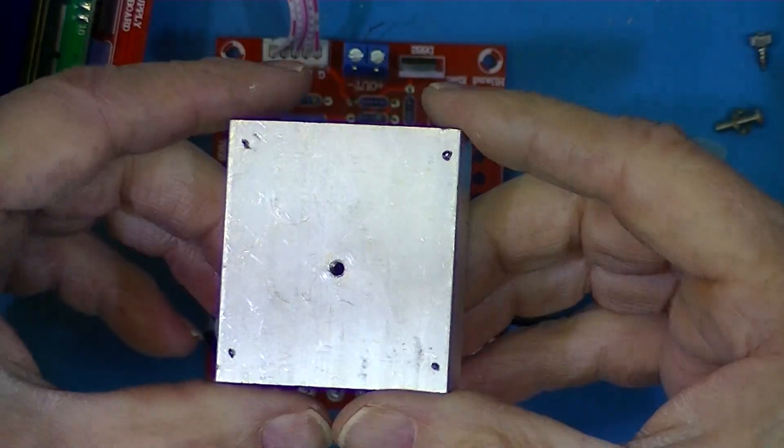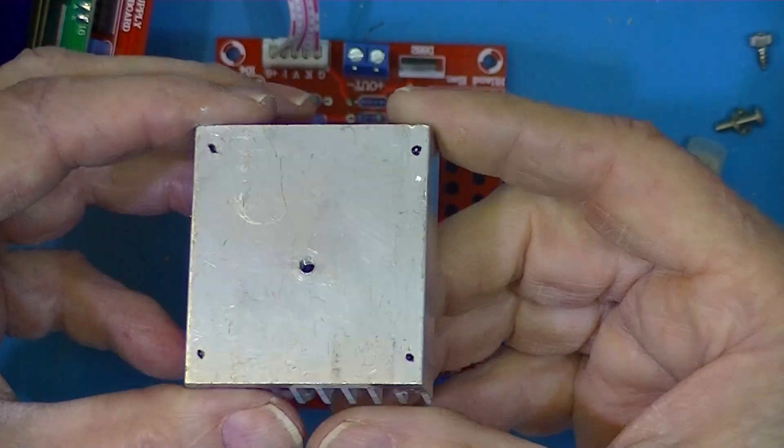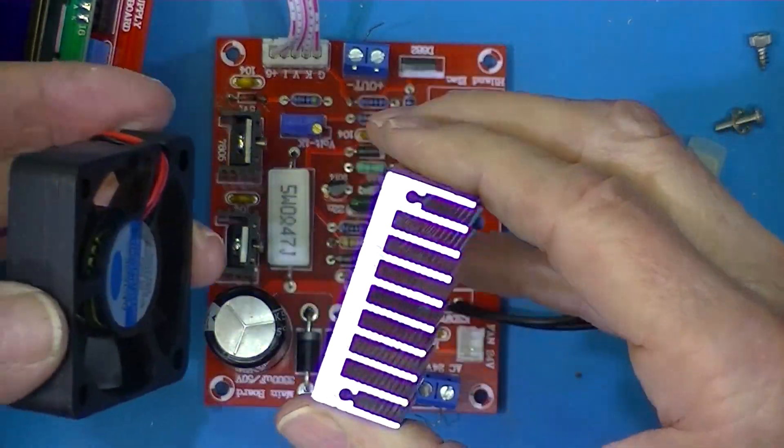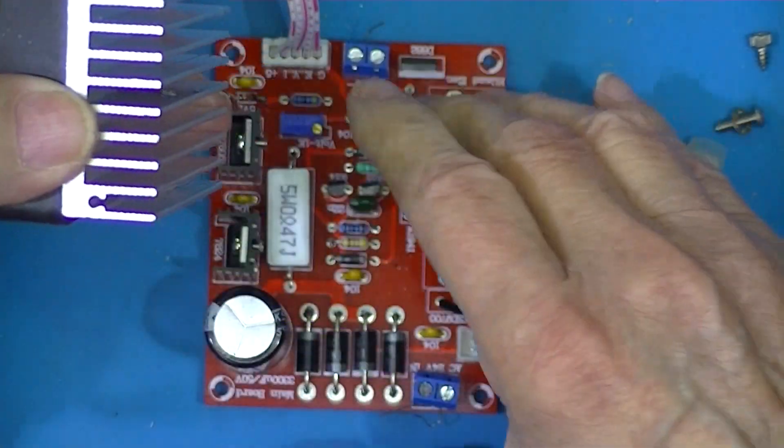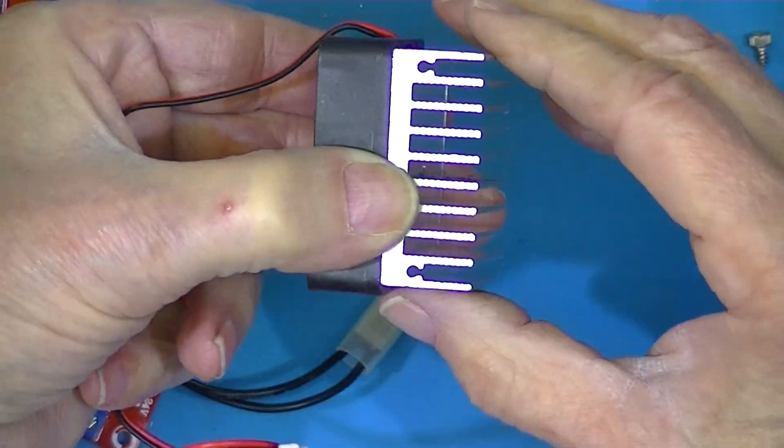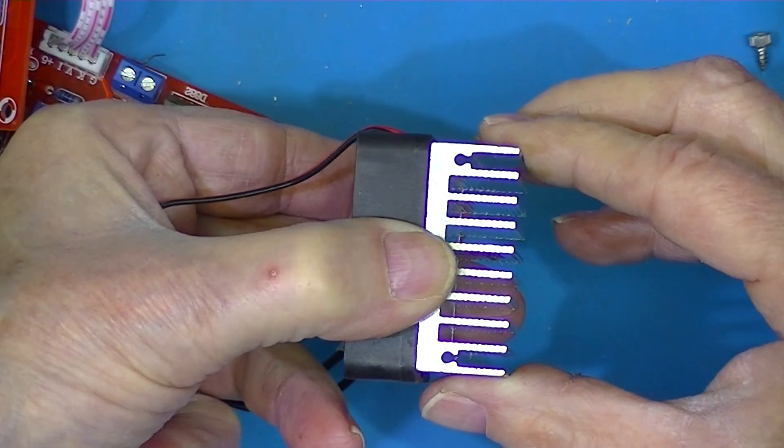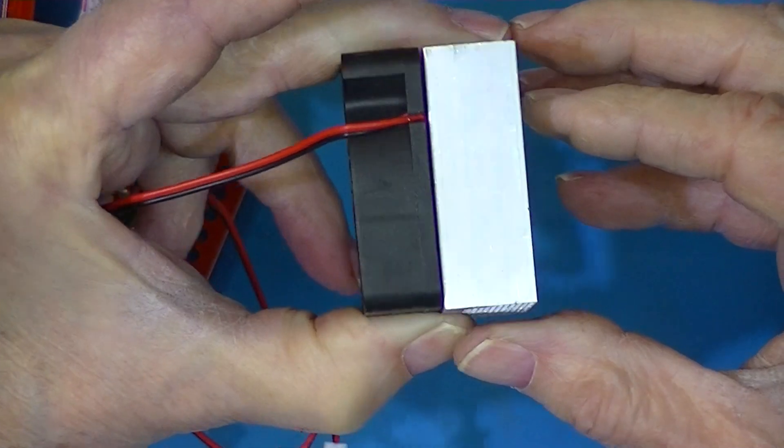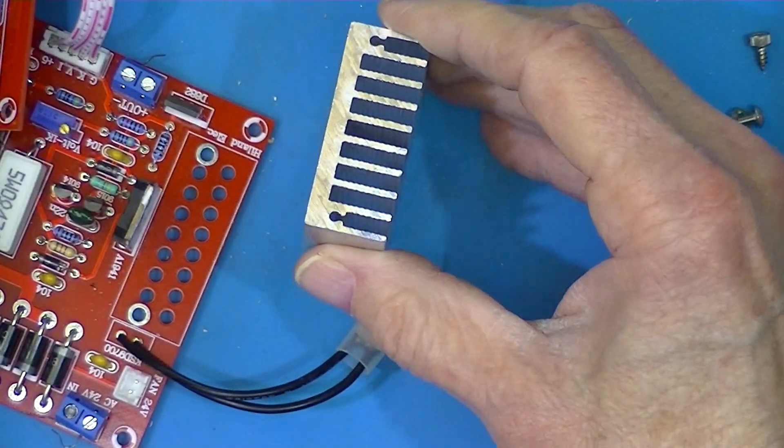I know that eBay is offering this heat sink which pretty well mates with a 50 millimeter fan. Let me move this out of the way here. It overhangs slightly on the sides, it has no overhang top and bottom when I say top and bottom - heatsink's mounted vertically.